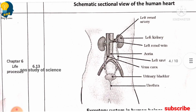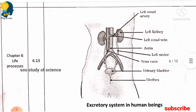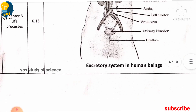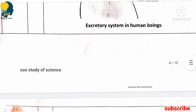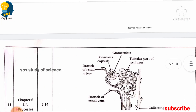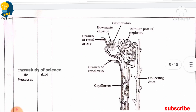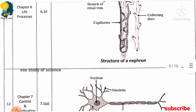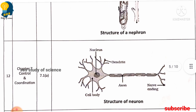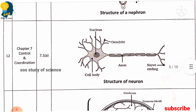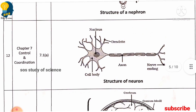The next diagram is the excretory system in human beings, from the lesson life processes, and the next diagram is the structure of a nephron, also from life processes. These are the diagrams from the life processes lesson.